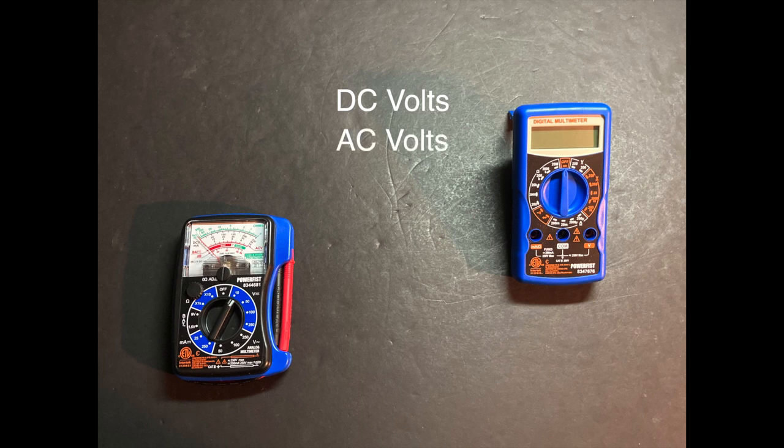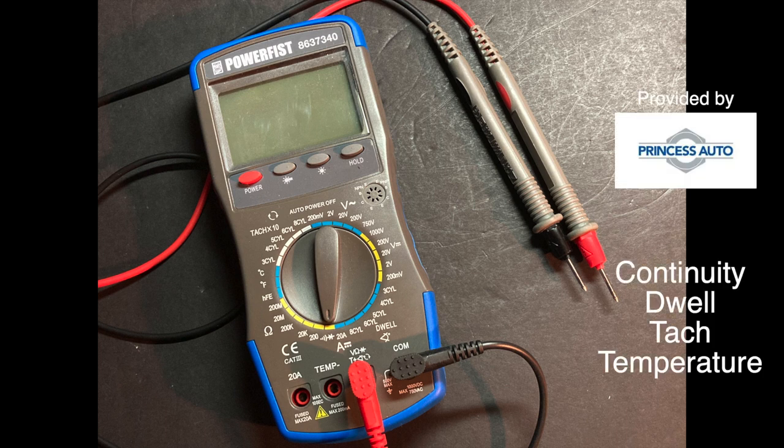Now, a multimeter can be analog or digital and generally tests things like voltage, current, and resistance, but it can also have a number of additional test points including this setting here for household batteries.